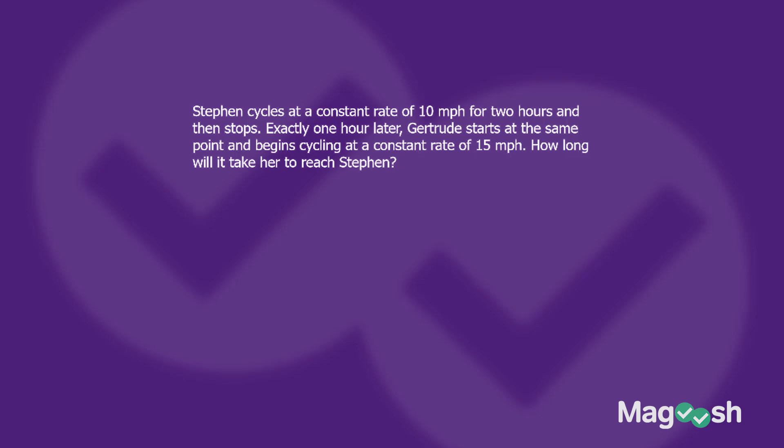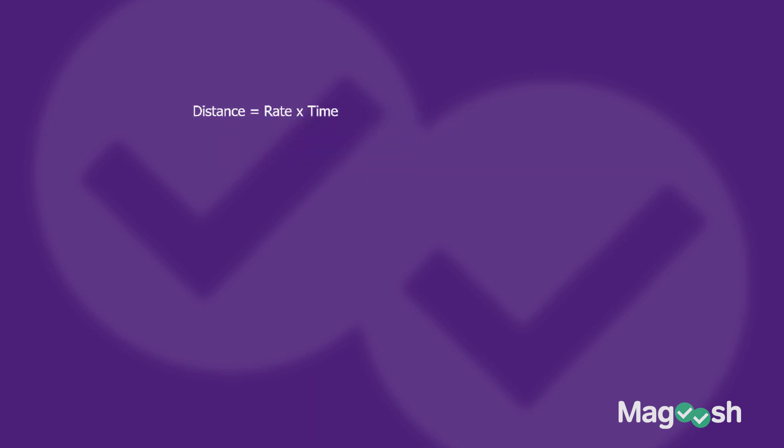Here's a distance problem. We have Steven cycling at a constant rate of 10 miles per hour and Gertrude cycling at a constant rate of 15 miles per hour. We know people are moving at a certain rate for a certain amount of time — that's how we know we're in the distance formula world. We're going to come back to this question in a second and go straight to that distance formula.